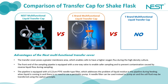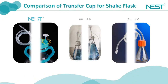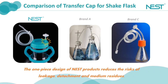Our multifunctional liquid transfer caps can also be used for liquid transfer without a peristaltic pump — we only need to add a syringe on the needle filter for gas aspiration to transfer cell-containing liquid based on the siphon principle. The Nest Liquid Transfer Cap has a one-piece design, while the connection approach of products from Brand A and Brand C is an insert design with silicone parts at the connection site, which can easily have liquid remaining and pose a risk of bacteria growth. The one-piece design of Nest products reduces the risk of leakage, detachment, and medium residues.